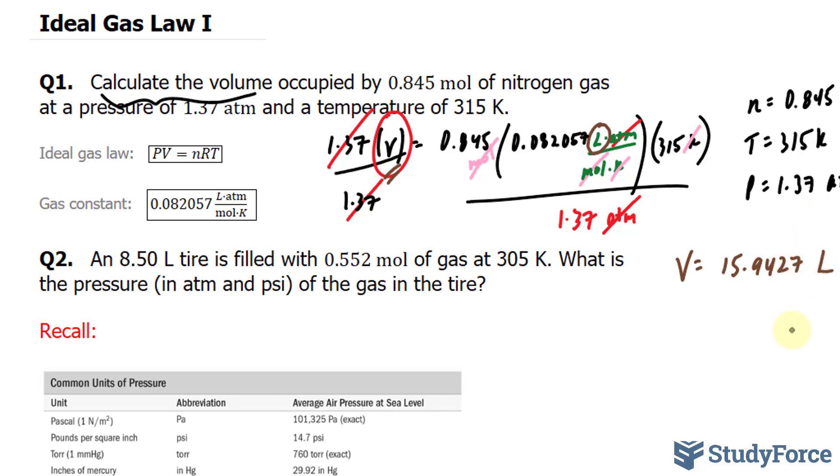We start off with three significant figures in our numbers, so we should end with three significant figures, especially since we're multiplying. The first number to be discarded is this 4, and since 4 is less than 5, it will not influence this 9. So everything after this 9 is insignificant, leaving us with 15.9 liters as our answer.